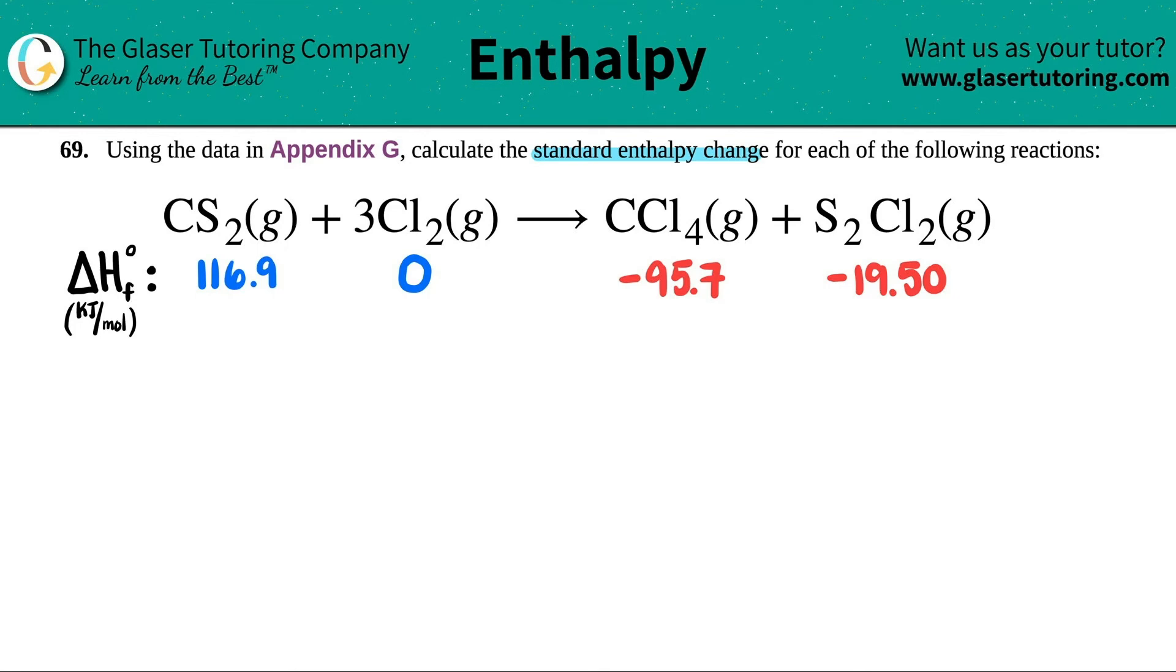Now how are we going to find the delta H change for the whole reaction? Well, it's a pretty easy formula. It's this one right here. Delta H for the whole reaction is equal to the sum of all the delta H's of the products minus the sum of all the delta H's of the reactants. This little symbol just means sum, aka addition.